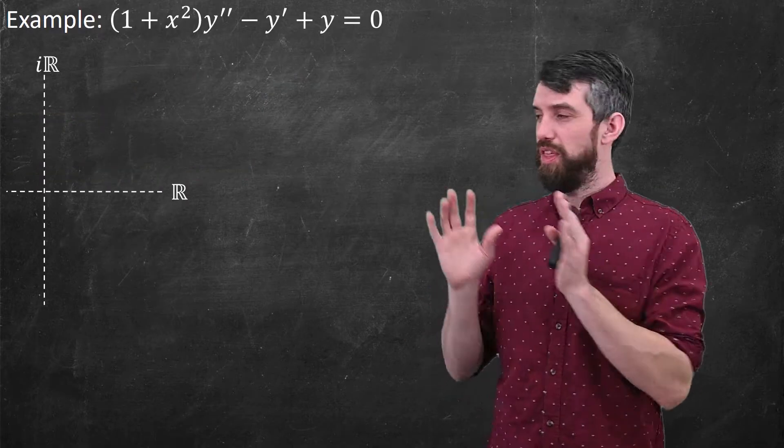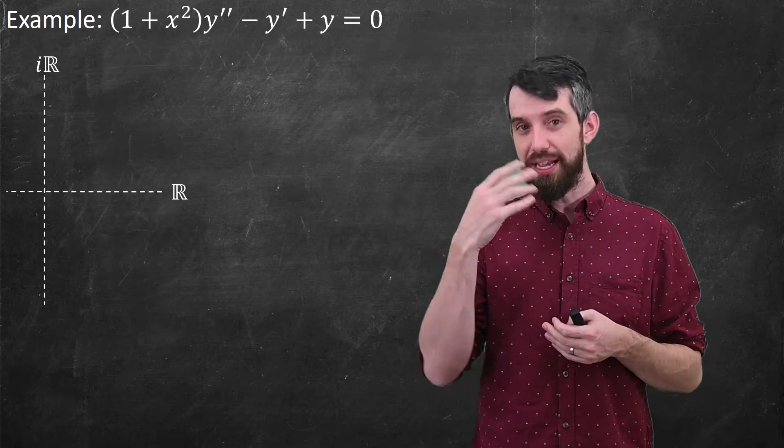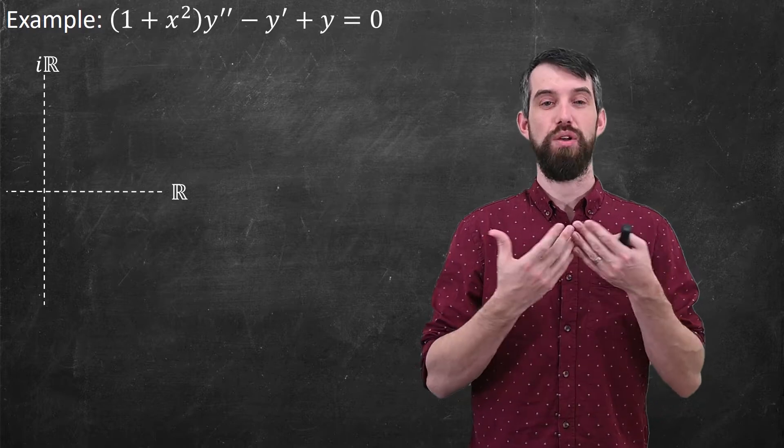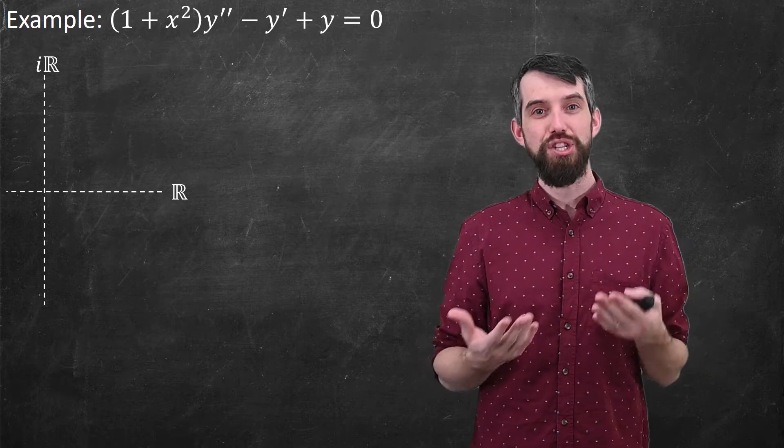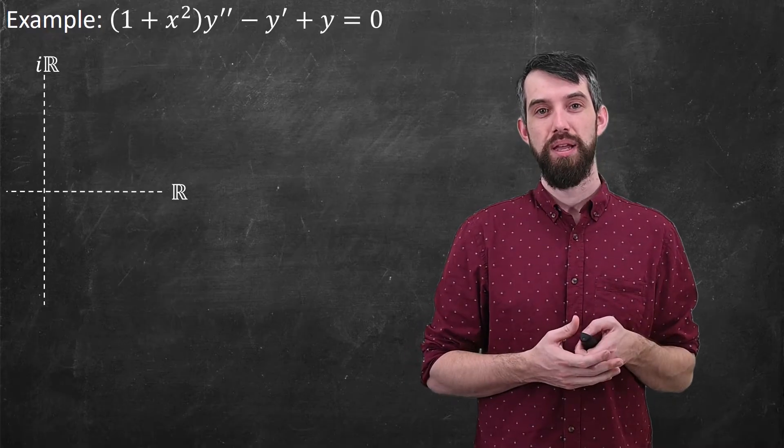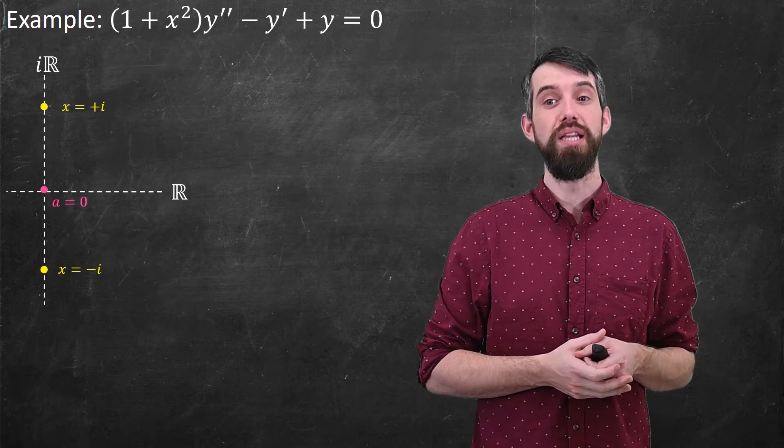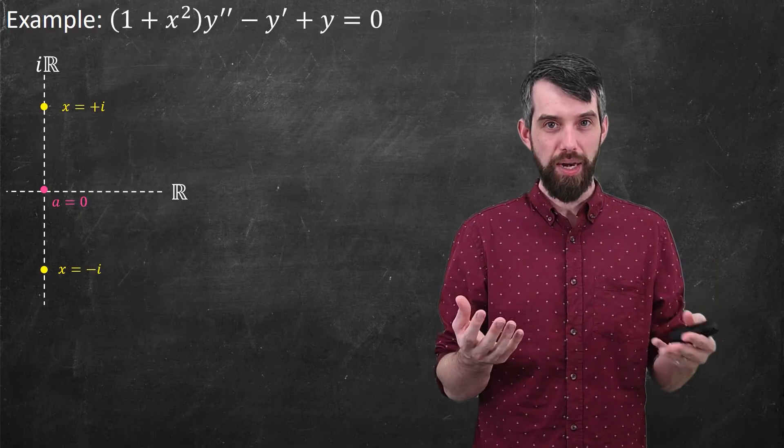I want to put up the complex plane. This is a way to represent complex numbers. I have one axis, which is the real axis, which is the horizontal, and the imaginary axis, which I denote as i times the real line. So on this complex plane, I have the a equal to 0 we've seen before, and I have my two singular points, plus i and minus i.